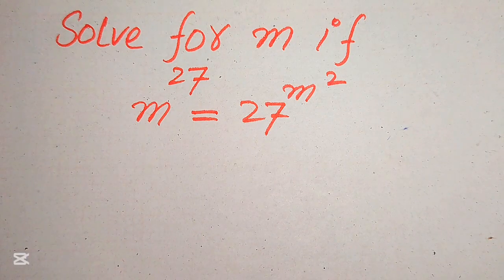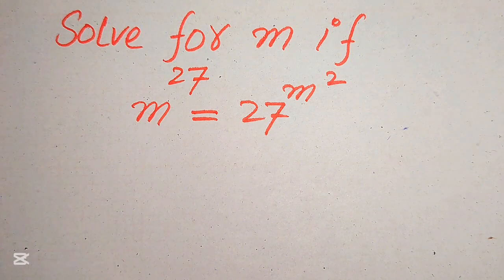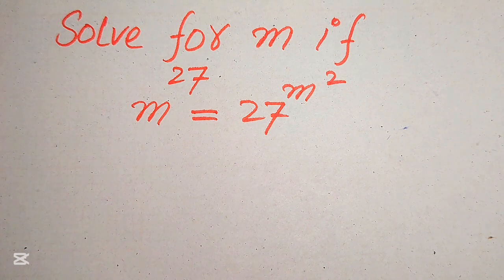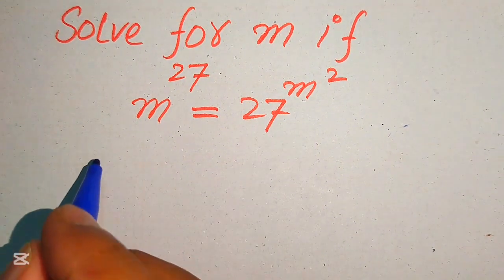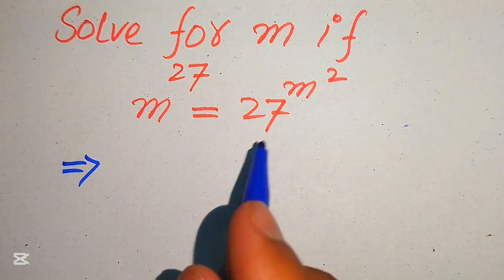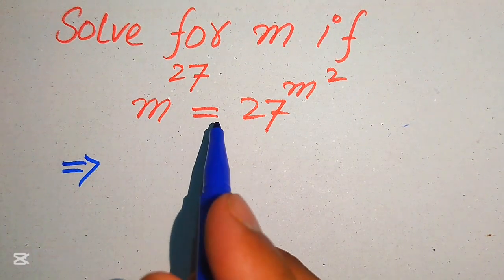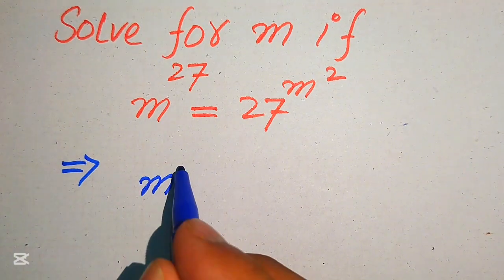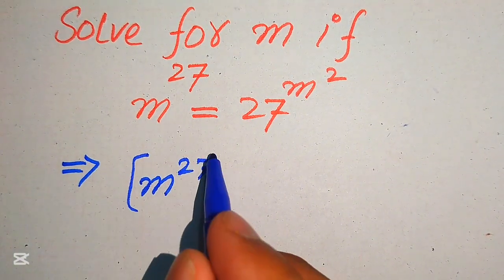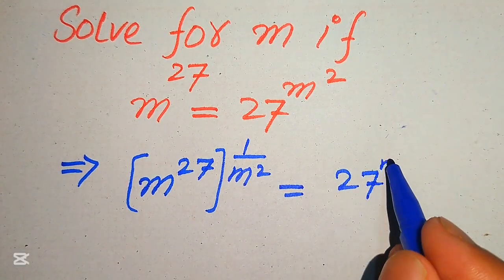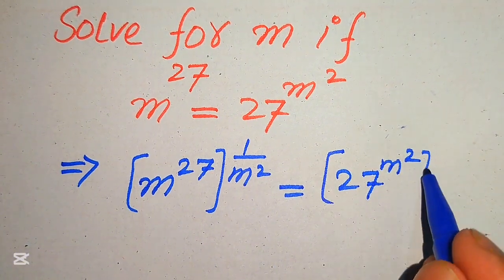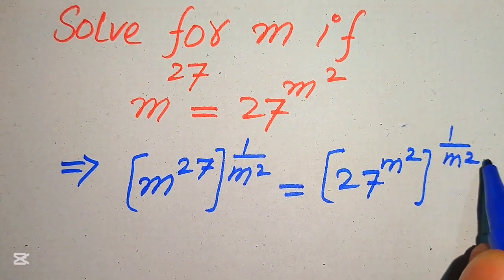The very first thing we are going to do is move the variable terms to the left hand side and the constant terms to the right hand side. To move m squared to the left hand side, we take the m squared root on both sides. So it will be written as m to the power of 27, whole power 1 over m squared, equals 27 to the power of m squared, whole power 1 over m squared.